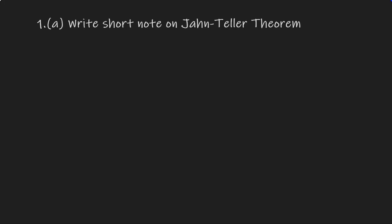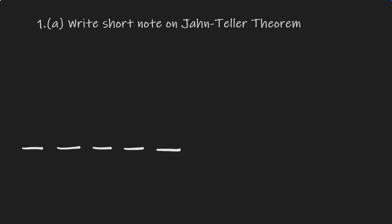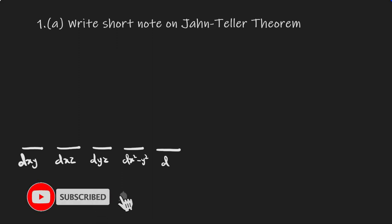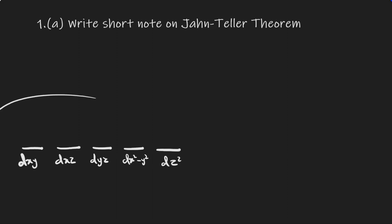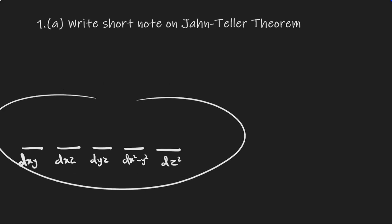Question 1 says: write a short note on Jahn-Teller theory. As we are aware, Jahn-Teller theory has to do with complexes, and these complexes comprise a central metal and ligands. It is believed that this central metal is made up of d orbitals, and these d orbitals are five in number. The five d orbitals are the dxy, dxz, dyz, dx²-y², and dz². These five orbitals are always linear, making the central metal linear, and they have the same energy — they are degenerate.